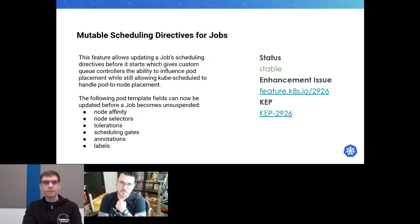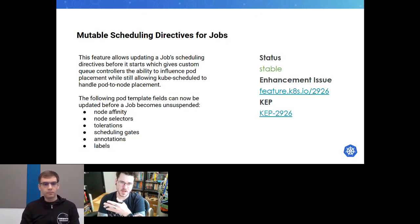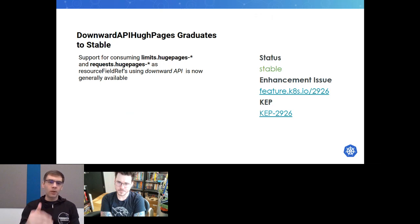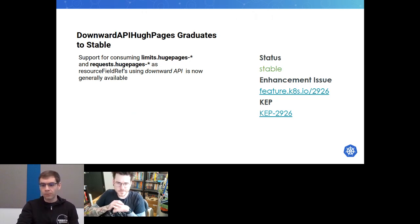Mutable scheduling directives for jobs is going to stable. The key point is that fields like node affinity, node selectors, toleration, scheduling gates, annotations, and labels can now be updated before a job becomes unsuspended. Also graduating to stable: downward API support for huge pages, which lets workloads know the limits and requests for huge pages of different sizes and quantities, so workloads can better react — bringing parity with other resources like memory and CPU quota.